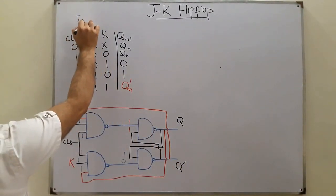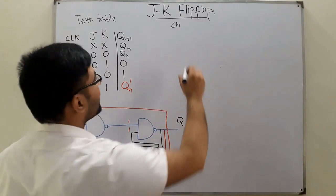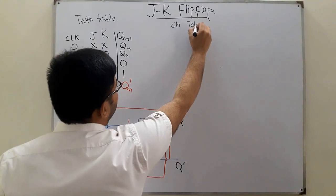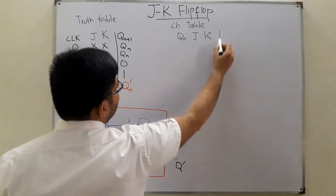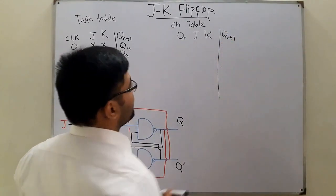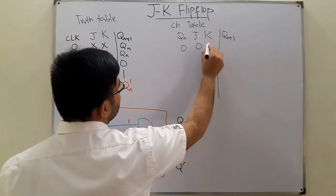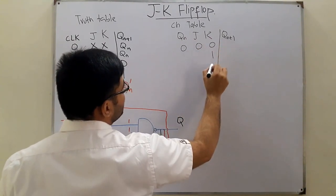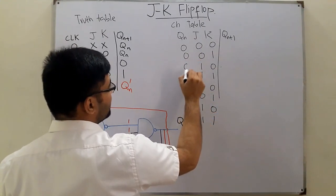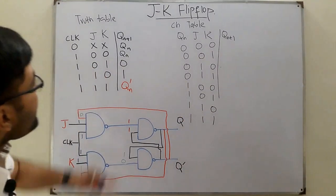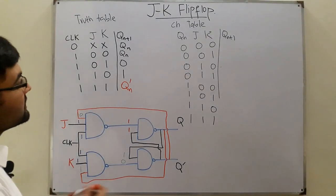Now we see the characteristic table and excitation table for the JK flip-flop. In the characteristic table, we have the present inputs Q-n, J, and K, and we define the next state Q-n-plus-one. With three inputs, there are 2-to-the-power-3 equals eight total input combinations. When J and K are both zero, the memory state is retained, so Q-n-plus-one equals Q-n.